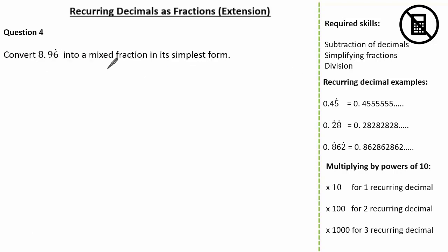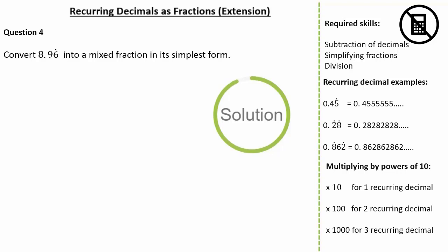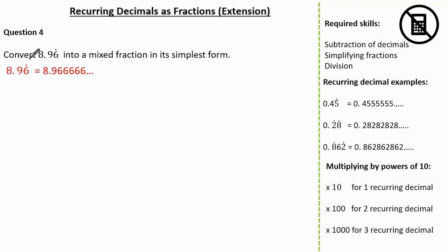Now let's look at another question. Here the question wants us to convert 8.96 recurring into a mixed fraction in its simplest form. See if you can give it a go and press pause if you need. So let's start by identifying what 8.96 recurring means. You can see the dot is above the 6, so this is the only digit that recurs. Just like before, let's identify x to be our recurring decimal. From our question, you can see that the 6 is the only digit that recurs. Therefore, we multiply by 10, giving us 10x to be 89.66 recurring, keeping to our 2 decimal places because it helps with the subtraction later on.